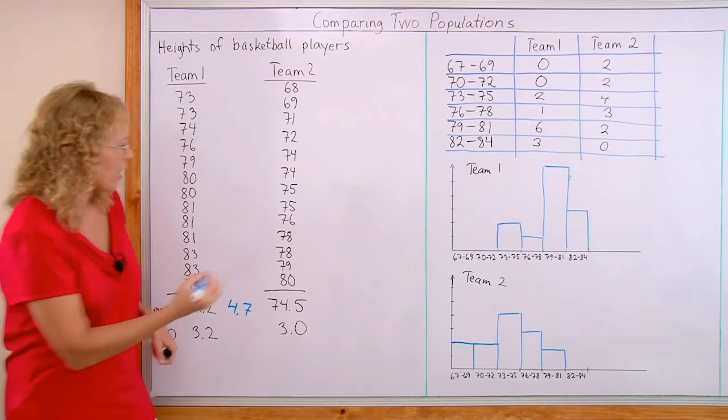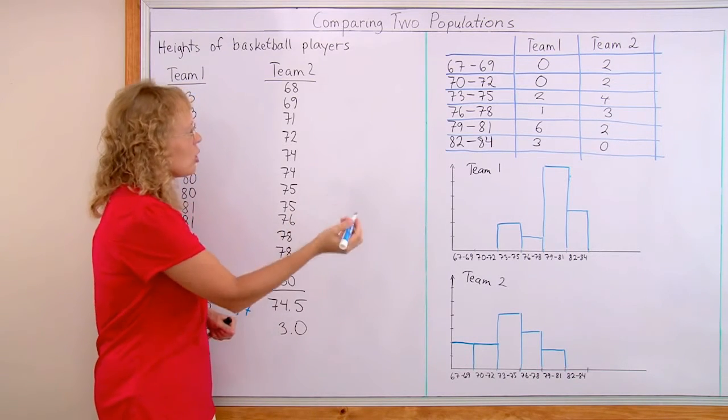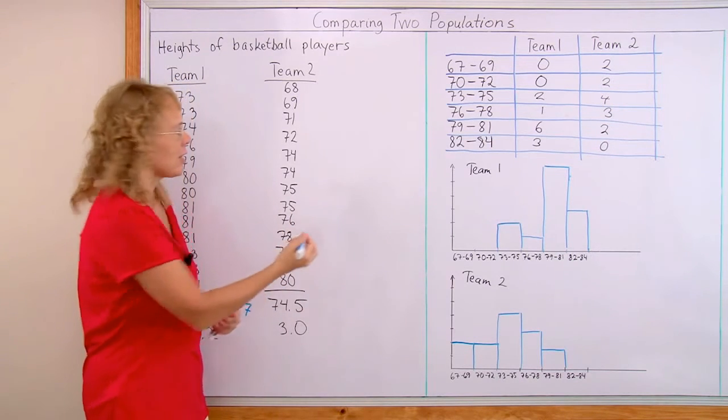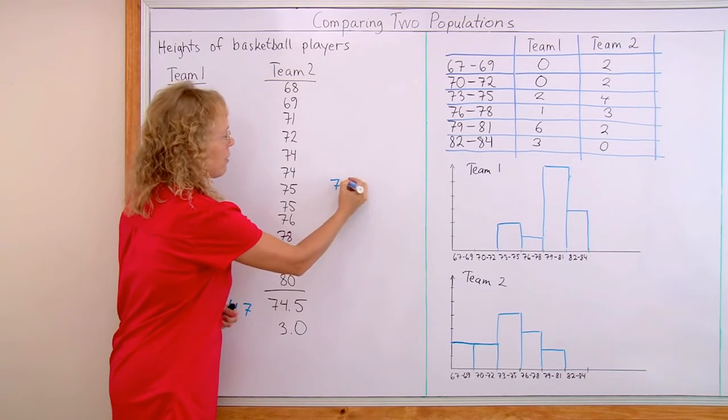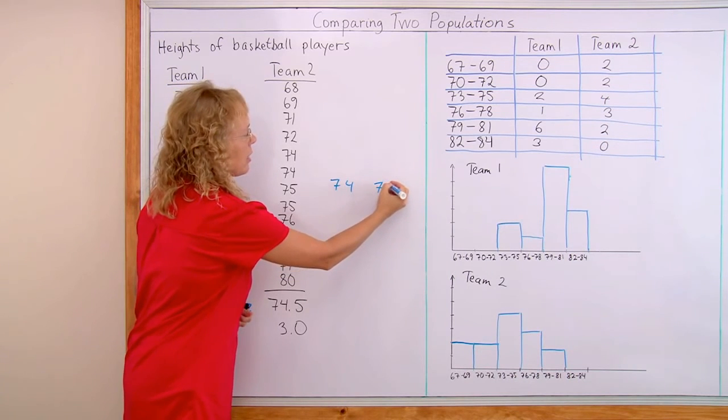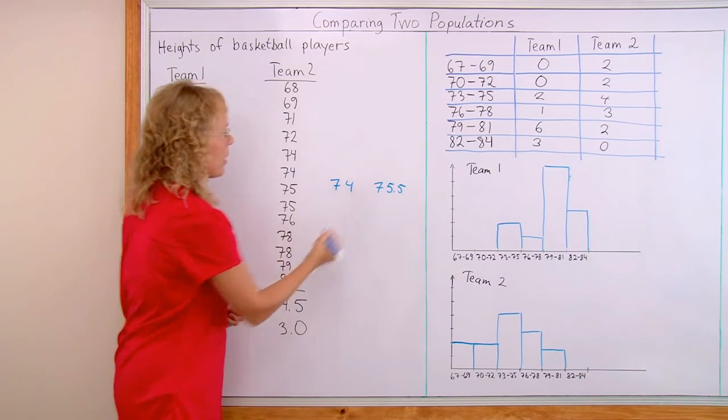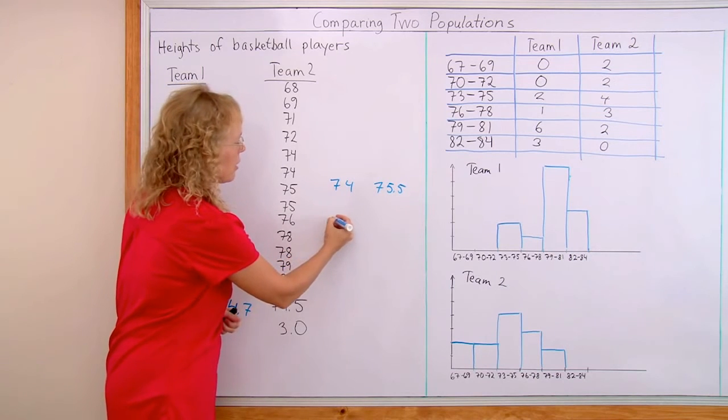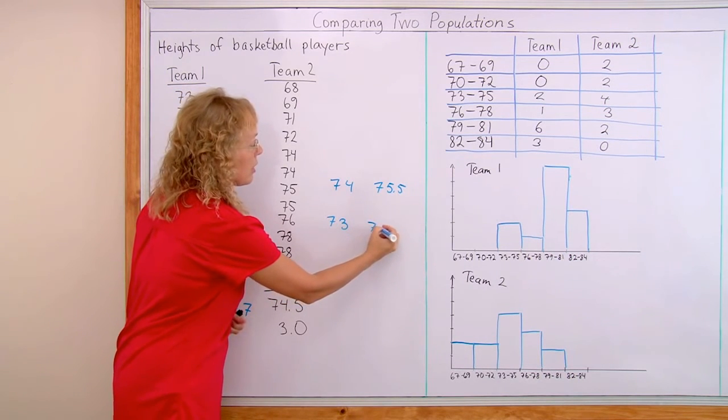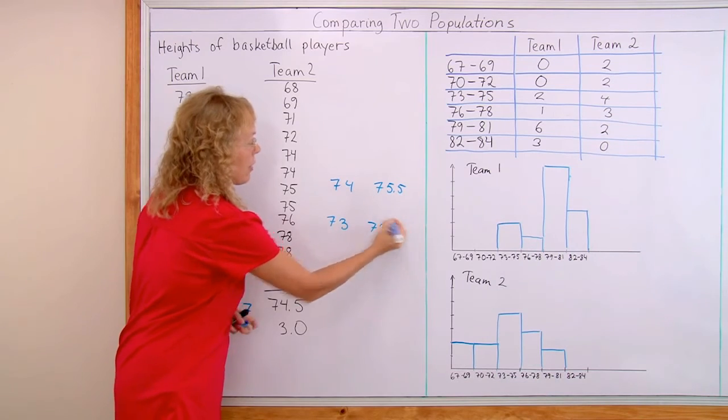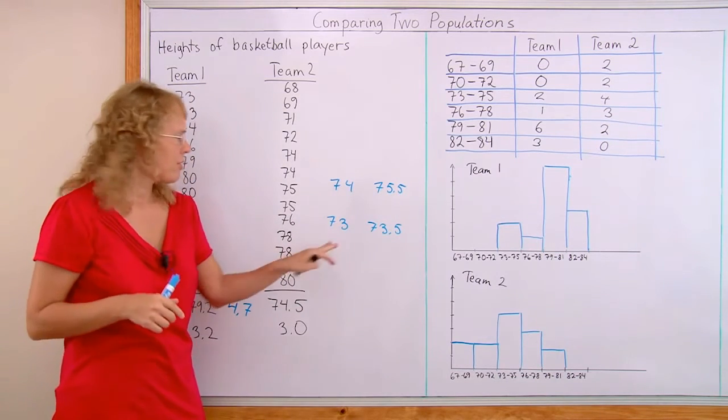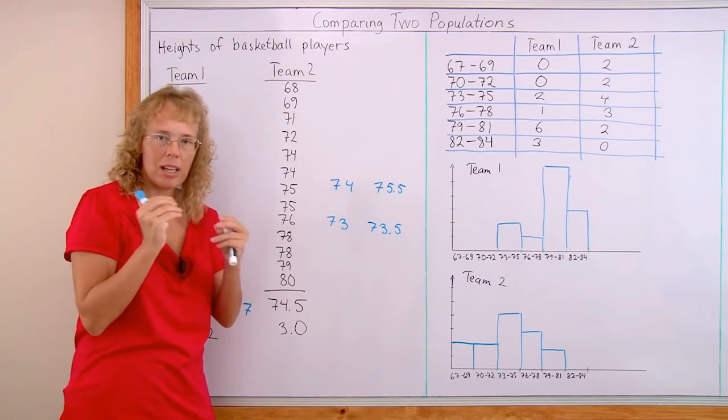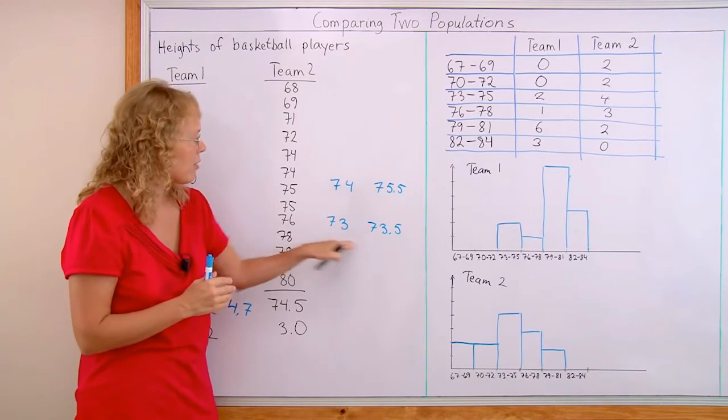What if you just had a bunch of numbers about some situation? How can we know that this much difference between two averages is a significant difference? What if the difference between two means, let's say we had two other data sets and the means were 74 and 75.5. Or, let's say that the means were 73 and 73.5.